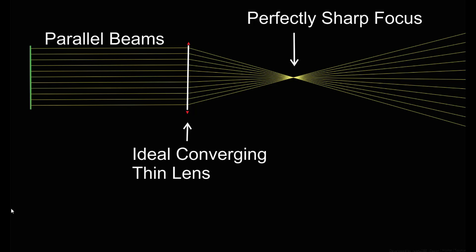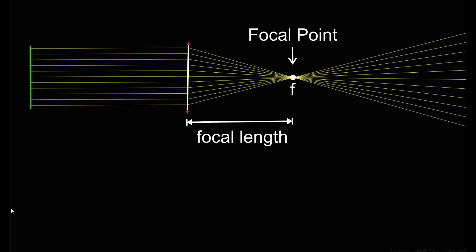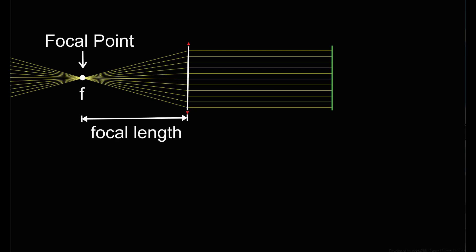Often for analysis, we use what is called an ideal converging thin lens. With this kind of lens, parallel beams of light will go through the lens and converge at a perfect point on the other side. These ideal lenses don't actually exist, but they're useful for making predictions or designing optical instruments. When the parallel beams converge down to a single point, we call that point the focal point. The distance from the lens to the focal point is called the focal length. If we shine parallel beams through the lens the other direction, we get a focal point on the other side that's the same distance from the lens.